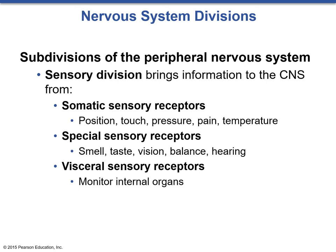The final category is special sensory receptors, which refer to smell, taste, vision, balance, and hearing. We tend to be very aware of these, so they are similar to somatic, but they use very special sensory receptors that are unique to these senses and exist nowhere else in the body, so we have our own special category for them.